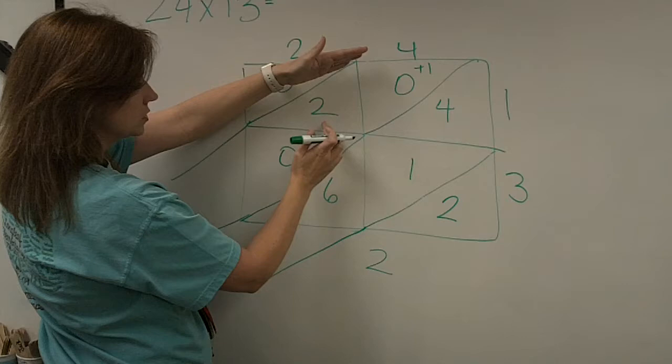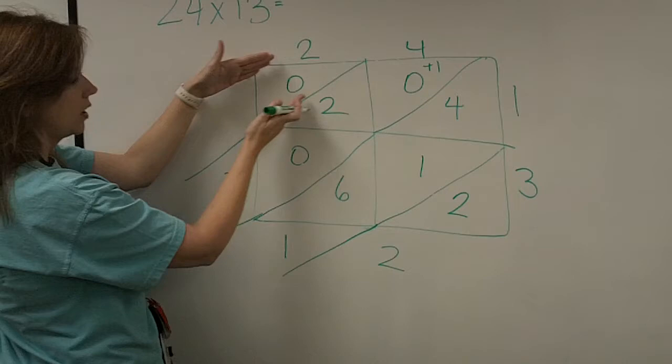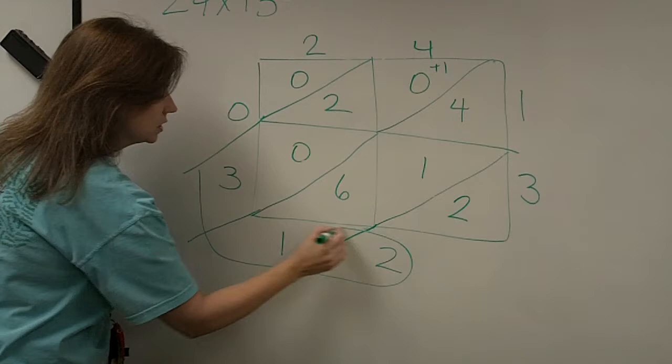Here it is, 1 and 1. Third diagonal, I've got a 1, a 0, a 2, a 0. So, in that diagonal, I add together, and I've got a 3. And in the last diagonal, I have 0. So, the answer to this problem is actually 312.